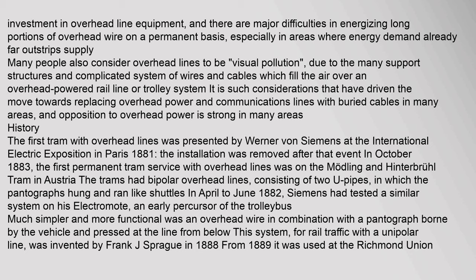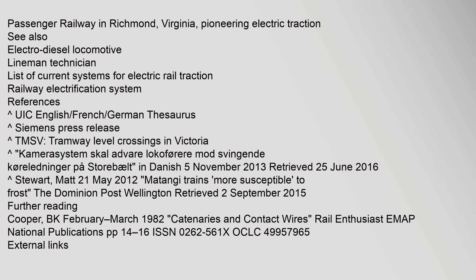The first tram with overhead lines was presented by Werner von Siemens at the International Electric Exposition in Paris in 1881, though the installation was removed after the event. In October 1883, the first permanent tram service with overhead lines was on the Mödling and Hinterbrühl tram in Austria, using bipolar overhead lines consisting of two U-pipes in which pantographs hung and ran like shuttles. Much simpler and more functional was an overhead wire combined with a pantograph pressed at the line from below; this system for rail traffic with a unipolar line was invented by Frank J. Sprague in 1888 and used from 1889 at the Richmond Union Passenger Railway in Richmond, Virginia, pioneering electric traction.